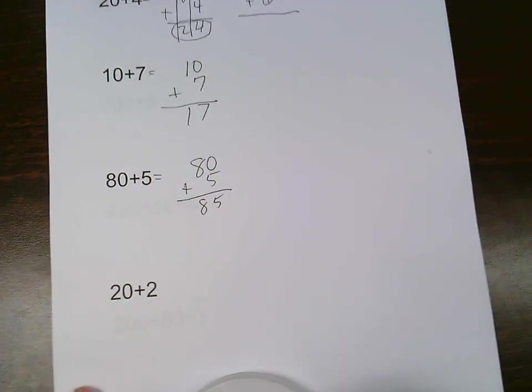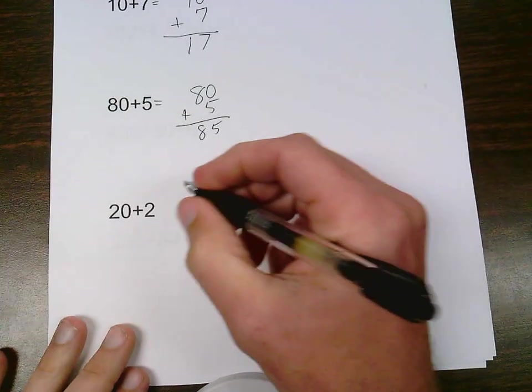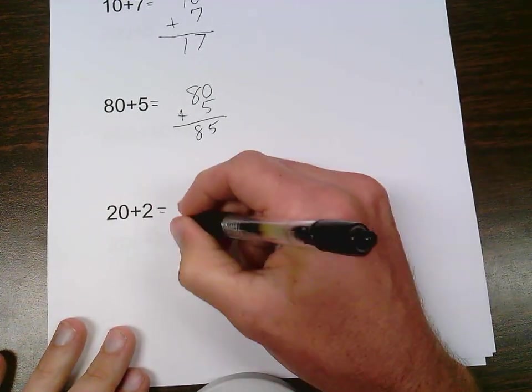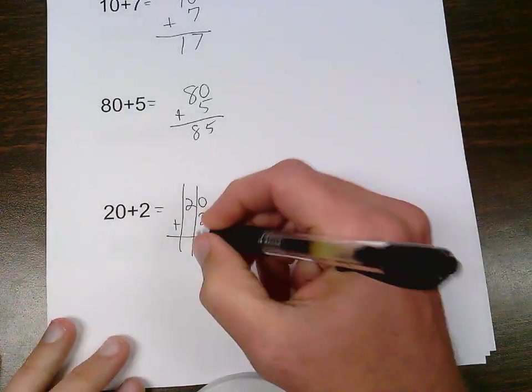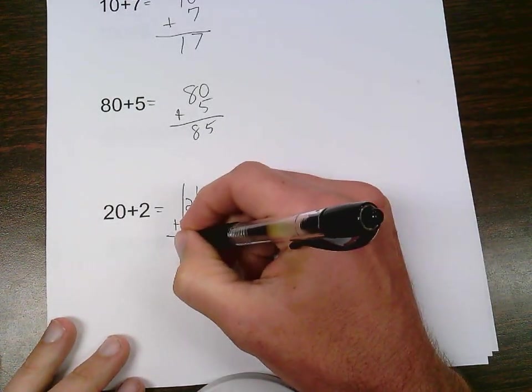And last one here, 20 plus 2, make sure the place values are lined up. 0 plus 2 is 2, 2 plus nothing is 2.